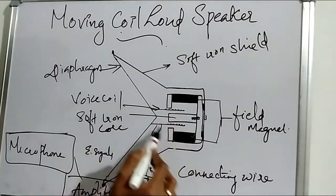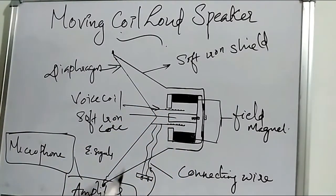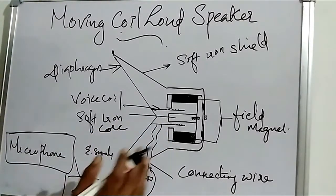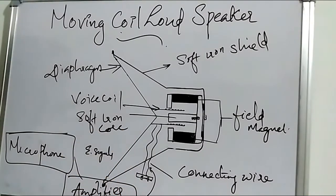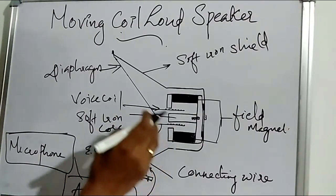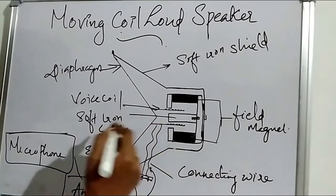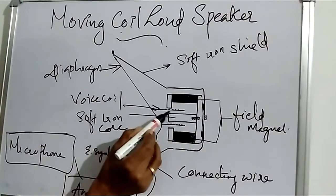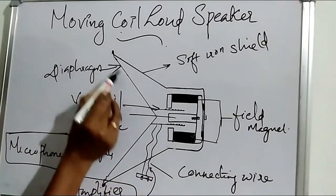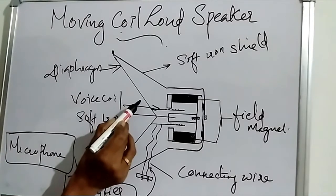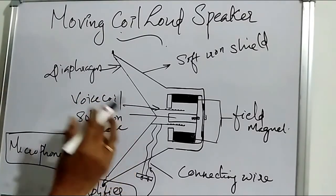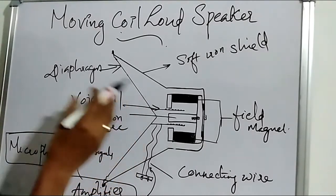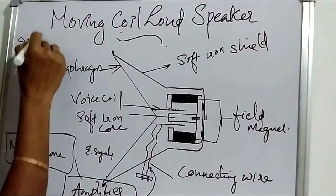The two magnetic fields exert a force on the voice coil — this is based on the motor principle. Due to the varying electrical signals, the voice coil vibrates. The voice coil is connected to the diaphragm, and the vibrating diaphragm emits sound waves.